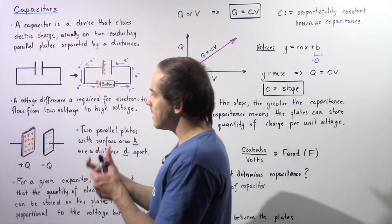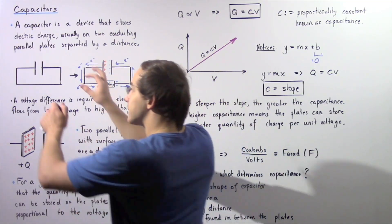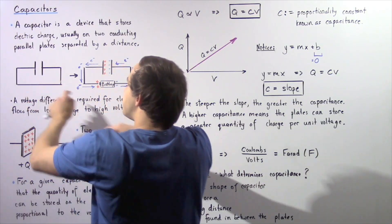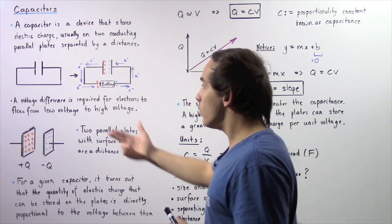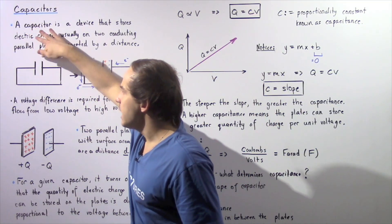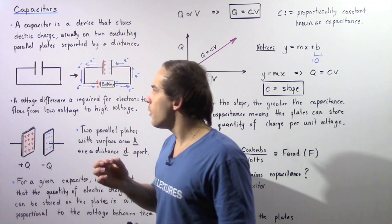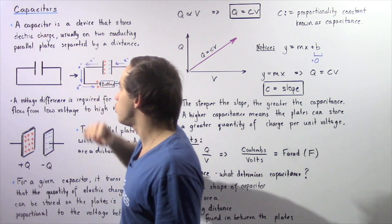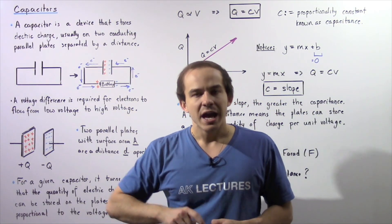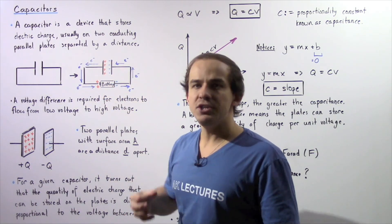These two conducting parallel plates have the same exact area, shape, and size. We connect them using a conducting wire. In this case, there is no voltage difference between plate one and plate two, so electrons will not flow, and the charges on these two plates will be neutral.